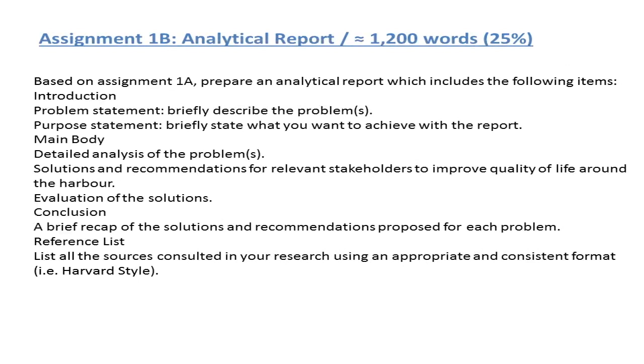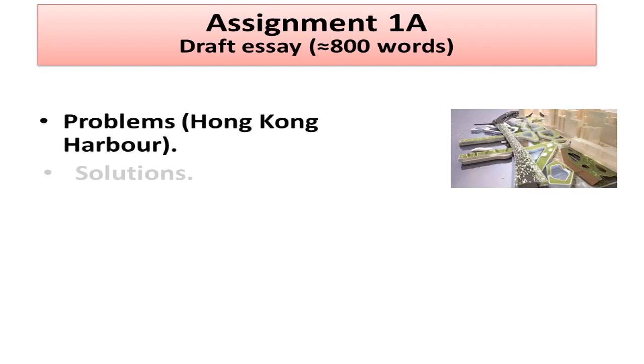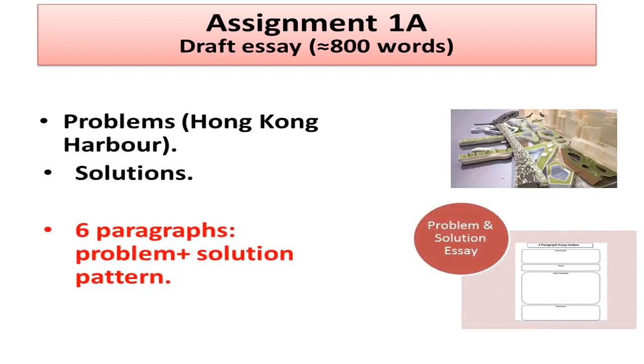Assignment 1B is called an analytical report and you can see it is a bit longer than Assignment 1A. The instructions also mention that this analytical report is based on Assignment 1A. Now you need to ask yourself, what is the difference between these two texts? What is a problem and solution essay? What is an analytical report? What do these texts look like? If you read the instructions carefully, you can see that you are first asked to write a draft essay where you identify problems affecting the development of the Hong Kong harbour. You then analyze those problems and propose solutions. By looking at the number of words you need to write, you can roughly guess you need to cover two or three problems in a total of six paragraphs, applying a problem-solution pattern. For instance, one paragraph explaining a problem, followed by another paragraph detailing a solution, and so on.